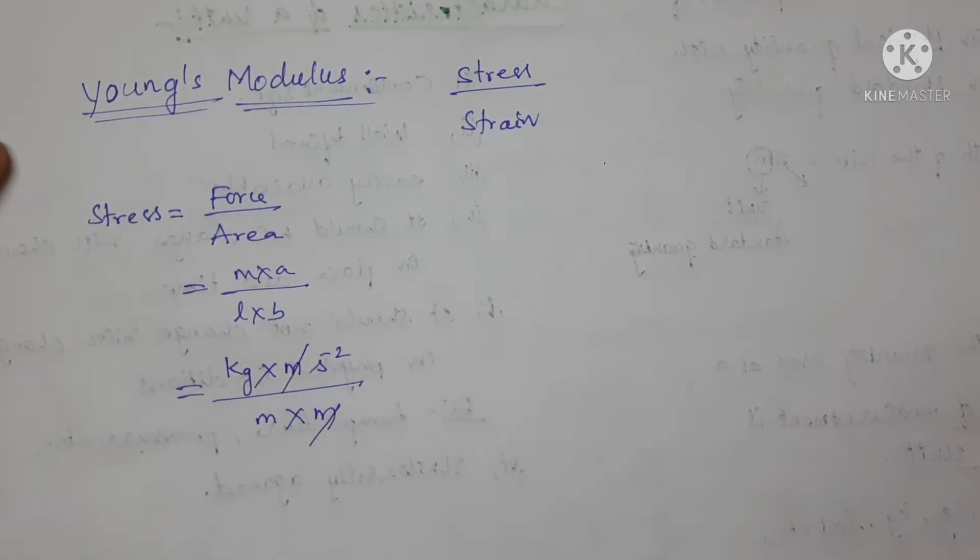Here meter meter will get cancelled. The remaining terms are kg. Here meter is there. By writing on the numerator it will be m power minus 1. Here it is already s to the power of minus 2.